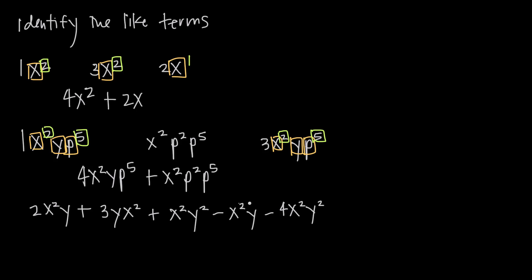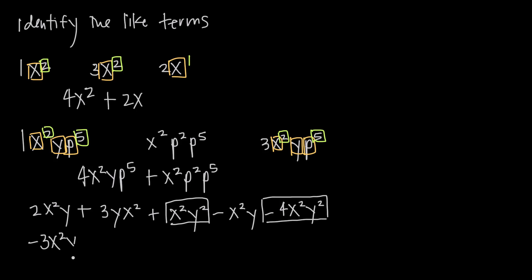Now in my third example, I have all of these terms added and subtracted together, and I need to look for like terms to simplify. The only variation is I have x's and x squareds, and y's and y squareds. Let's look for terms where we have x squared and y squared together. That happens here and here — both have x squared and y squared. So these are like terms and I can combine them. I have one of them and negative four of them, so one minus four gives me negative three x squared y squared.